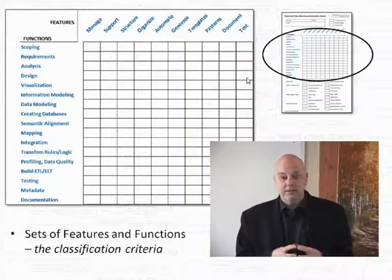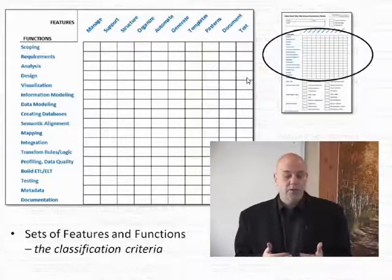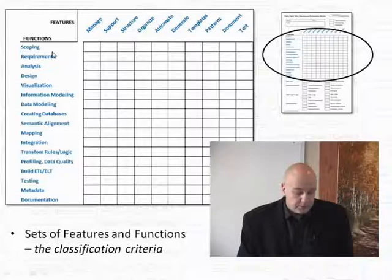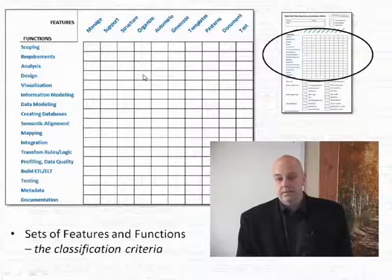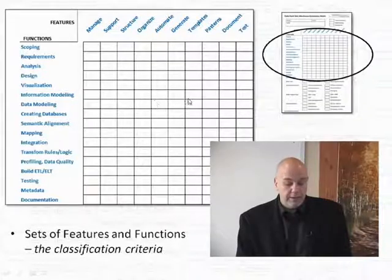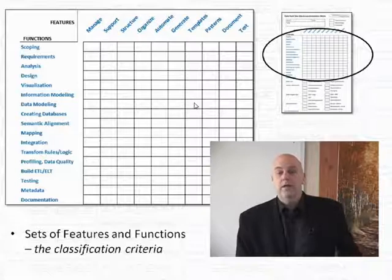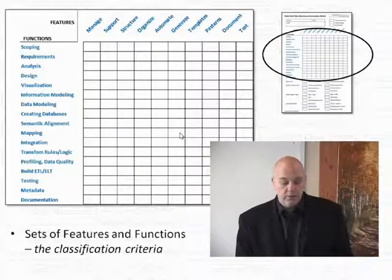From there, we get into the concepts of features and functions — basically classification criteria. For example, do you have something that for my design phase I want that supports and helps me to organize it? Likewise, you might have something that provides templates for data modeling. That might be another category you fill in for what you're looking for. And if you look at something like mappings, you might want something that can help automate and generate mappings — something that's actually going to do this for you.